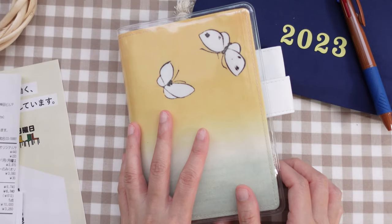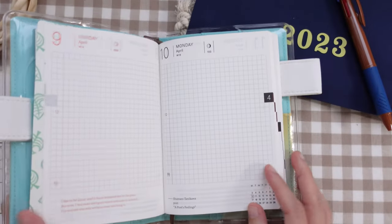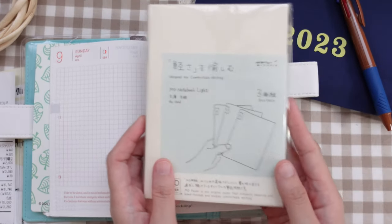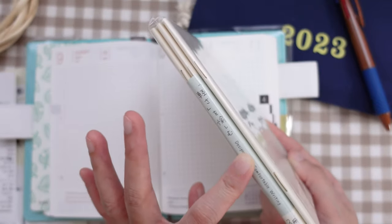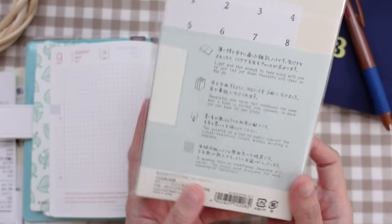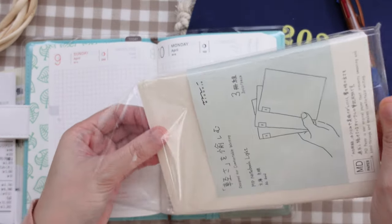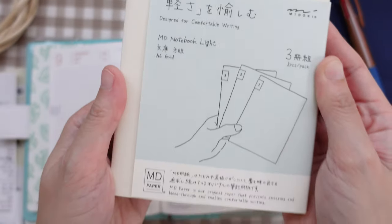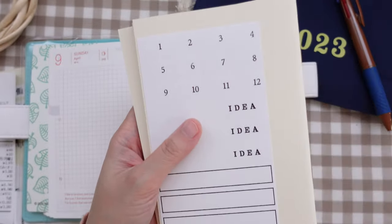So my biggest concern with using the A6 planner is the space, of course. Like, what if I get a really busy day or I want to write a lot on that day? So my solution to that are these Midori A6 refills. So I got a pack of three of these refills. They're grid. Let's open this.